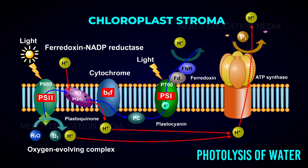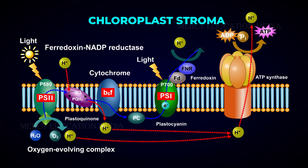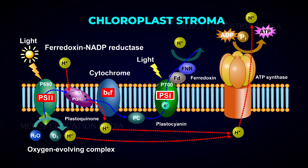Manganese, calcium, and chloride ions play prominent roles in the photolysis of water. The electrons thus released are used in the reduction of PS2. Similar to PS2, PS1 is excited by absorbing photons of light and it gets oxidized. This oxidized state of PS1 draws electrons from PS2 and gets reduced.